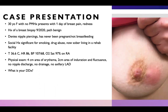Her vitals were normal in the emergency room. On physical exam, she has a four-centimeter area of erythema with a two-centimeter area of induration and fluctuance. She has no nipple discharge, no spontaneous drainage, and no axillary lymphadenopathy. What is your differential diagnosis?